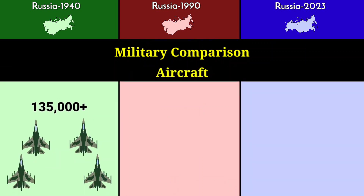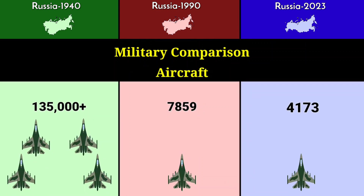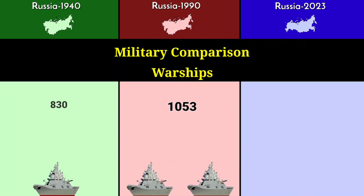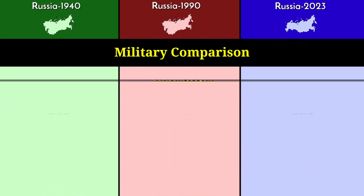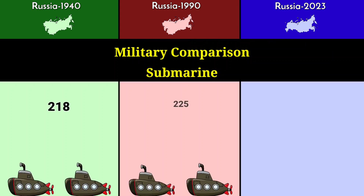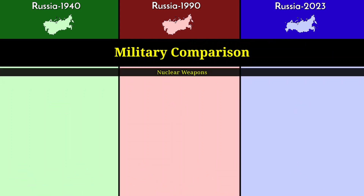Aircraft: 135,000 in 1940, 7,859 in 1990, and 4,173 in 2023. Warships: 1,053 in 1940, 830 in 1990, and 603 in 2023. Submarines: 218 in 1940, 225 in 1990, and 64 in 2023.